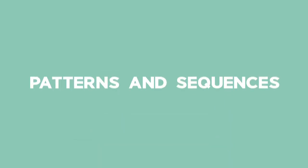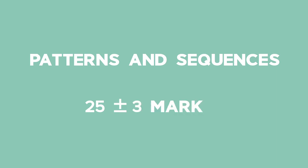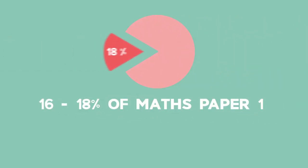Patterns and Sequences are roughly 25 plus minus 3 marks in the final exam, which is 16 to 18% of Maths Paper 1.